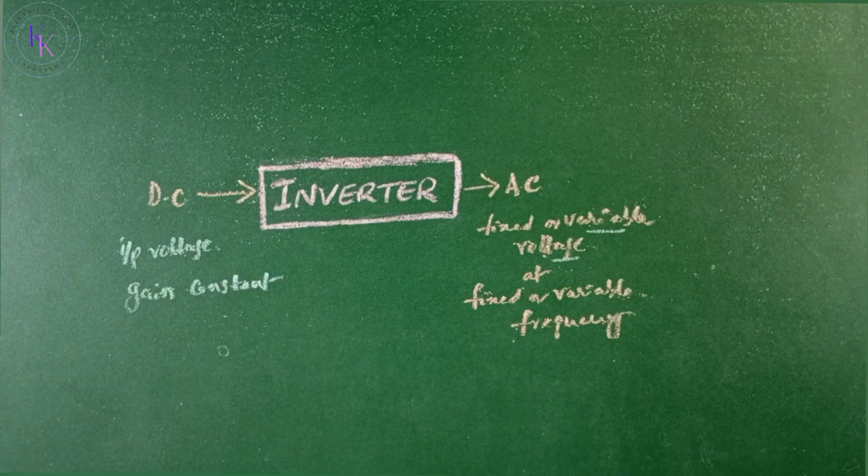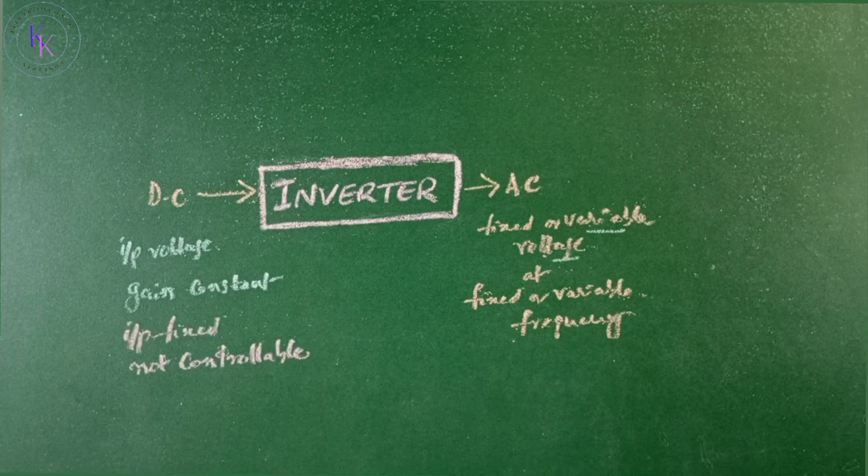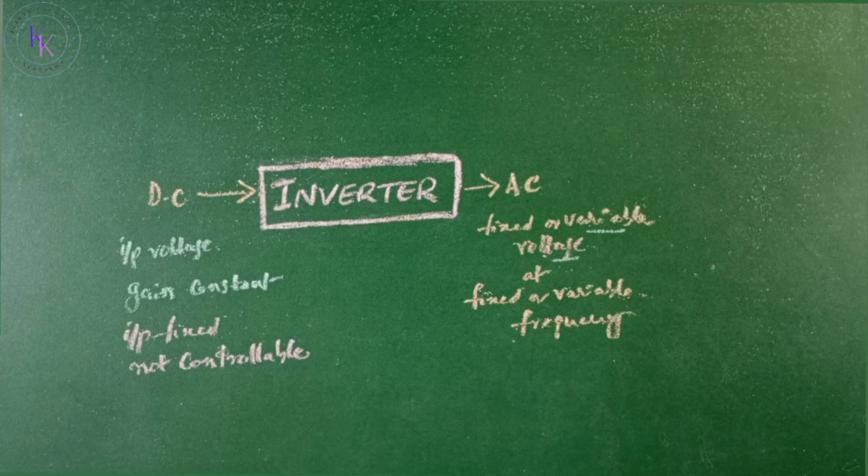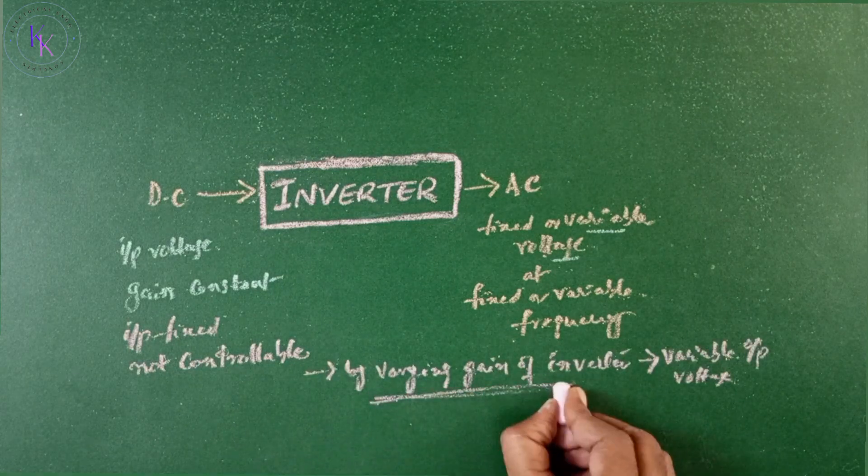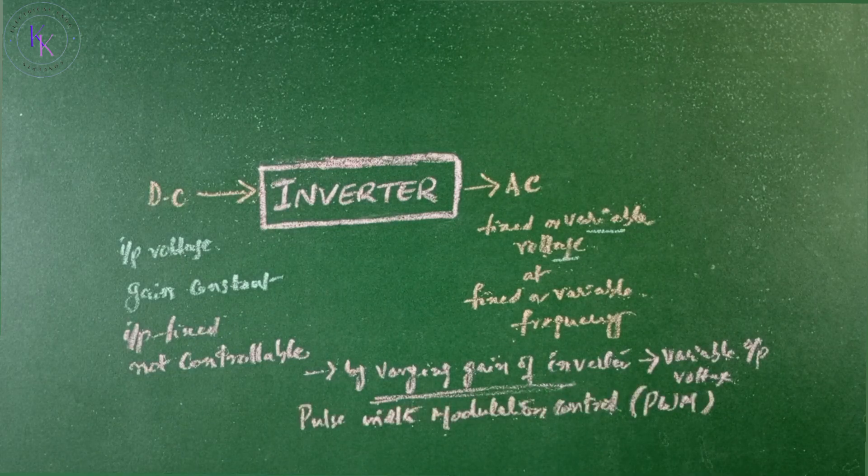If the DC input voltage is fixed and is not controllable, a variable output voltage can be obtained by varying the gain of the inverter, which is normally accomplished by pulse width modulation control within the inverter.